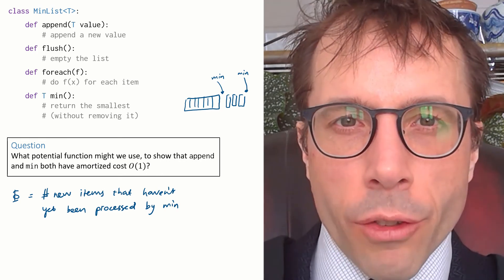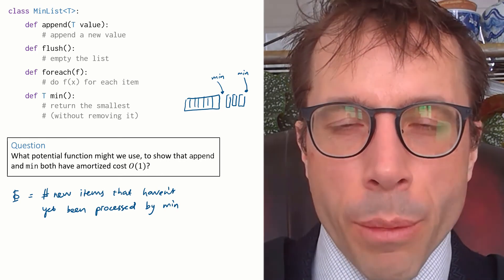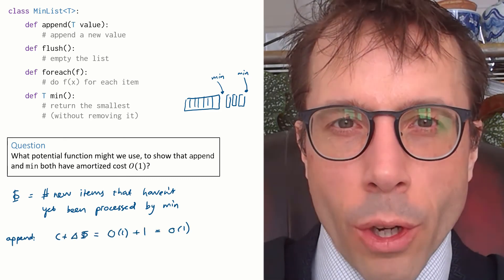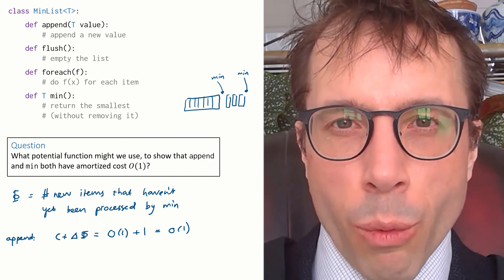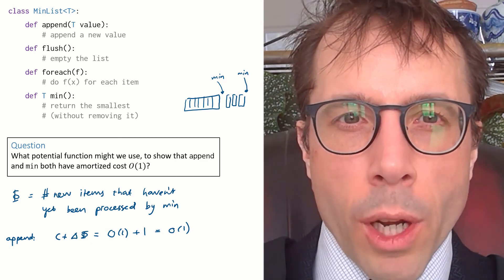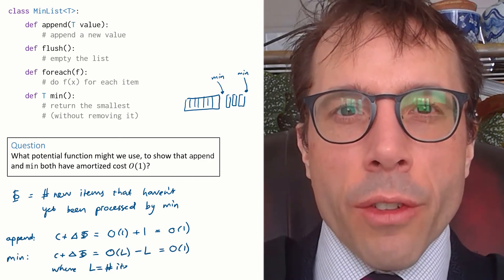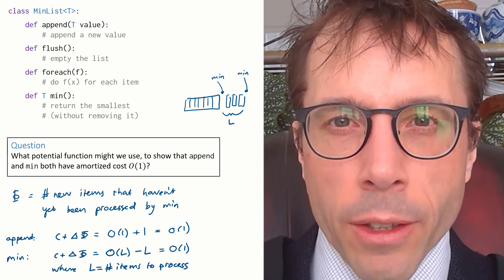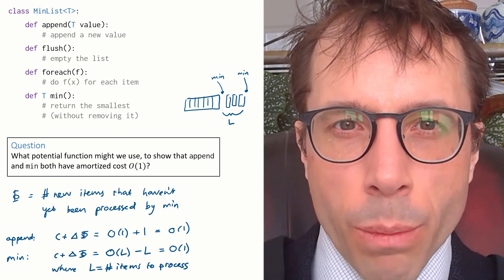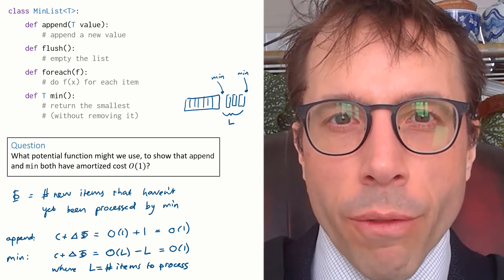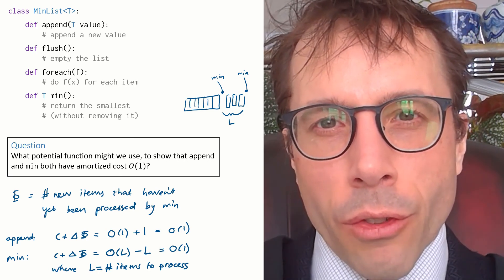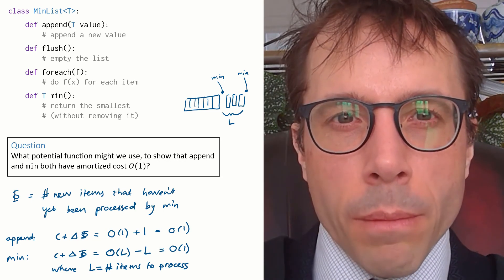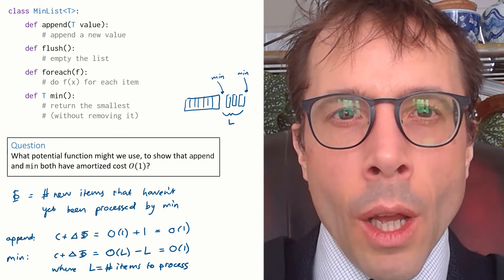Well, okay, let's look at the amortized costs that we get from this potential. The amortized cost of append is true cost plus delta phi, which is O of 1 plus 1, in other words, O of 1. And the amortized cost of the min function is true cost O of L, where L is the number of items in the tail that we're going to process, plus delta phi, which is minus L. So the total amortized cost, again, is O of 1. Okay, well, this is a typical piece of amortized analysis.